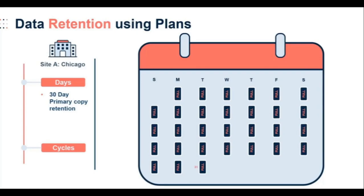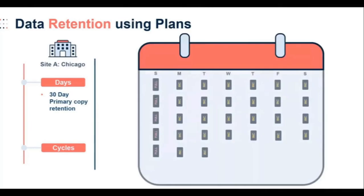Now, let's say that the same customer has decided to only run full backups once a week. By definition, this would imply that a cycle in this configuration would be a total of seven days. This is key to understanding how data retention works, as this changes how often data can qualify for aging.